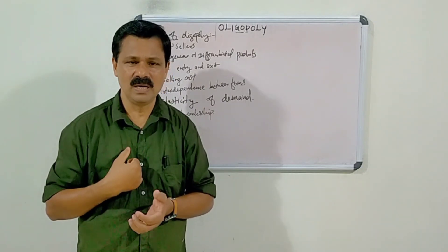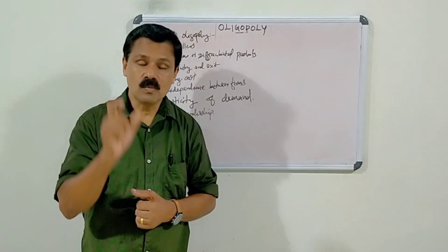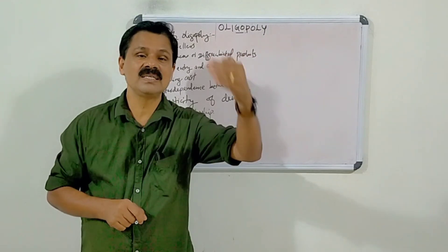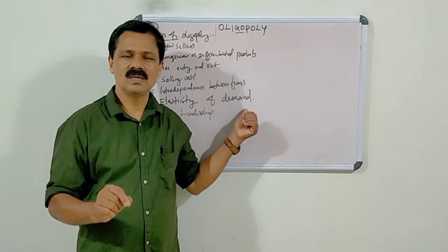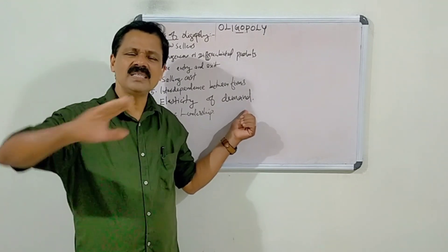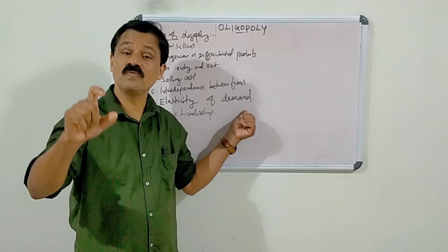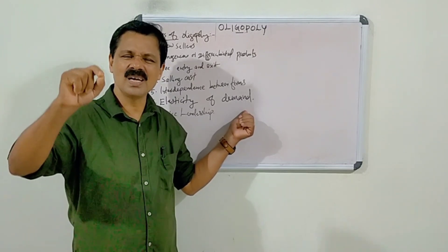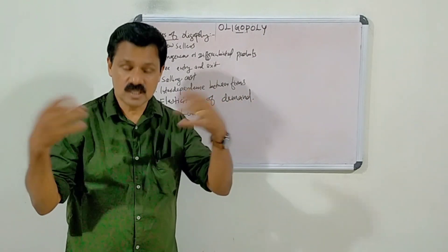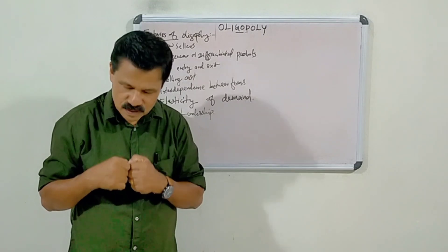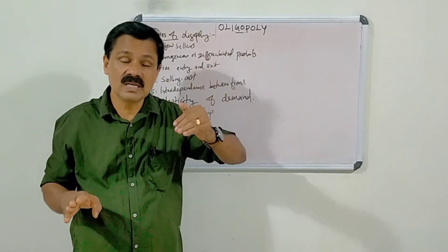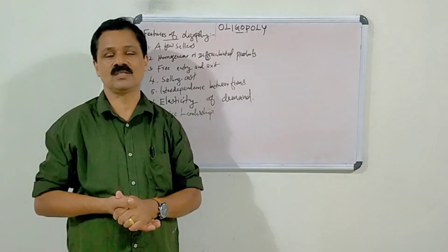By elasticity of demand we mean changes in demand as a result of changes in the price of the commodity. If a commodity is facing perfectly elastic demand, an infinite quantity of the commodity will be demanded at a given price. If a commodity produced by an oligopolist firm faces perfectly elastic demand, infinite quantity of that commodity will be demanded at a given price, or if there is a slight change in its price.